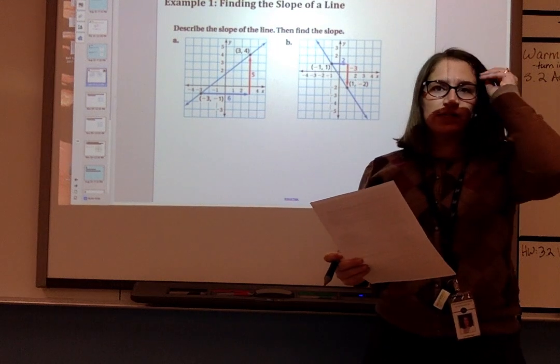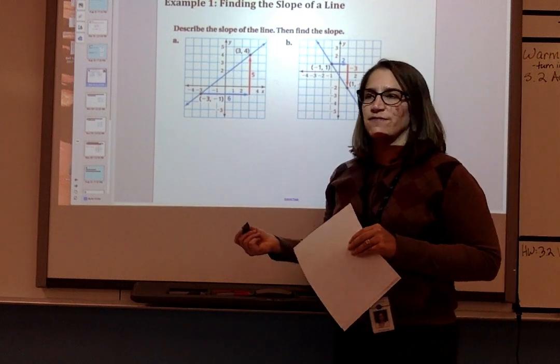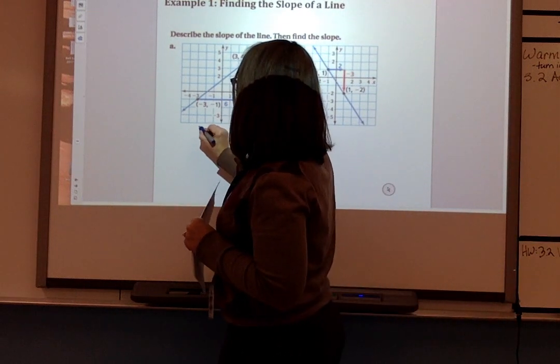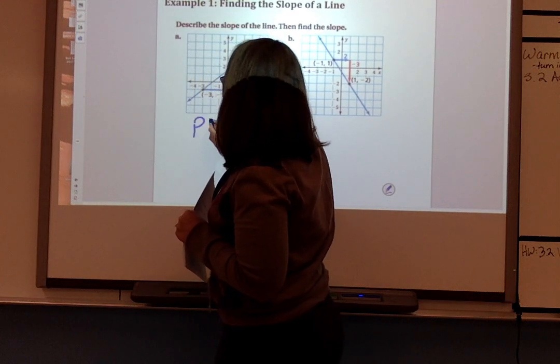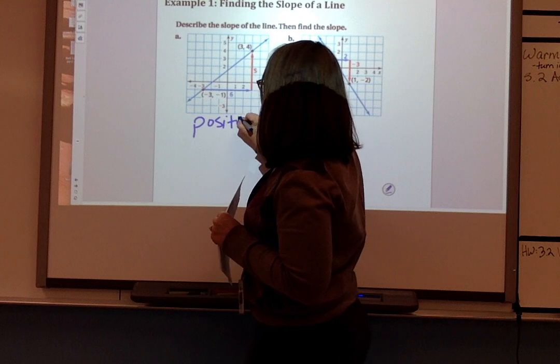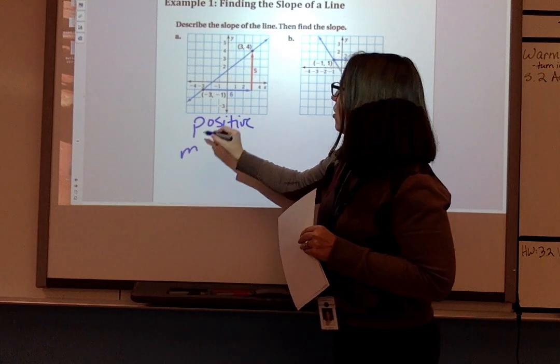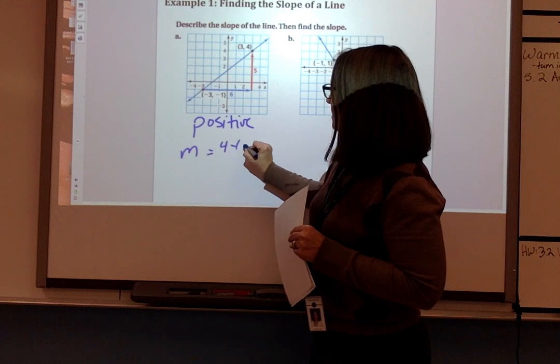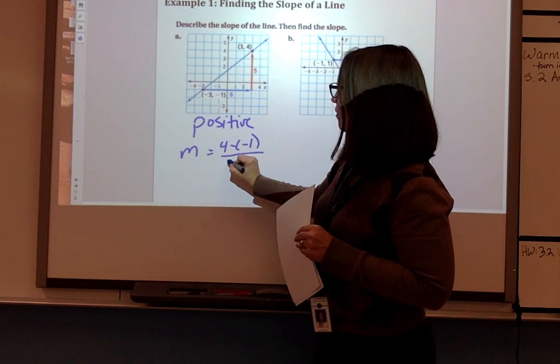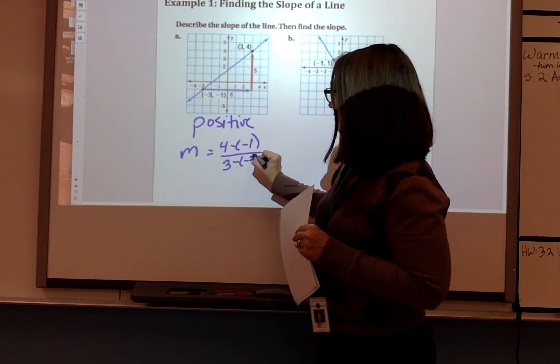So we need to describe the slope of each of these lines and find the slope. For a, this would be a positive slope going up as we move from left to right.